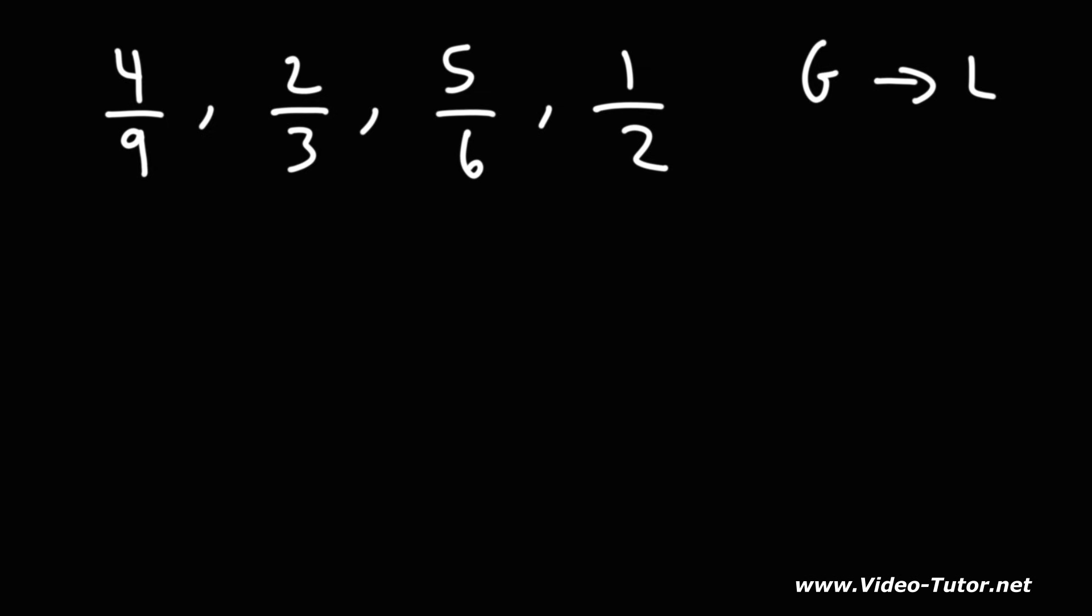Let's start with the largest number, 9. Multiples of 9 are 9, 18, 27, 36. Now 9 is not a multiple of 2, but 18 is a multiple of 2. 18 is also a multiple of 3 and 6, so 18 is the least common multiple of 9, 3, 6, and 2.